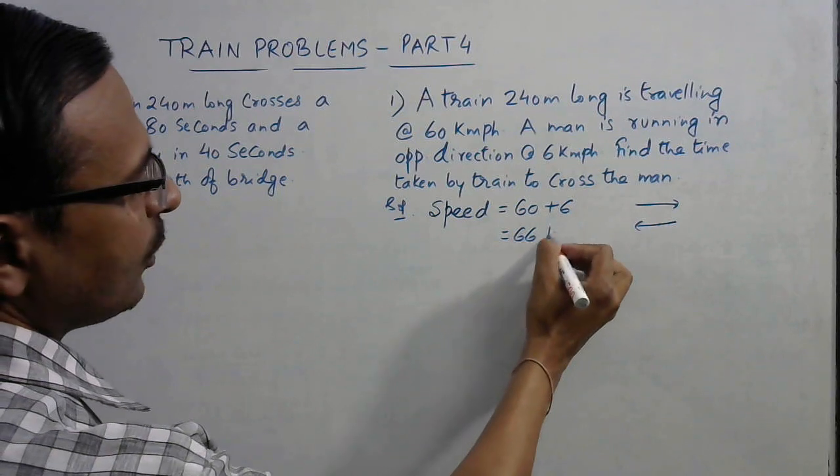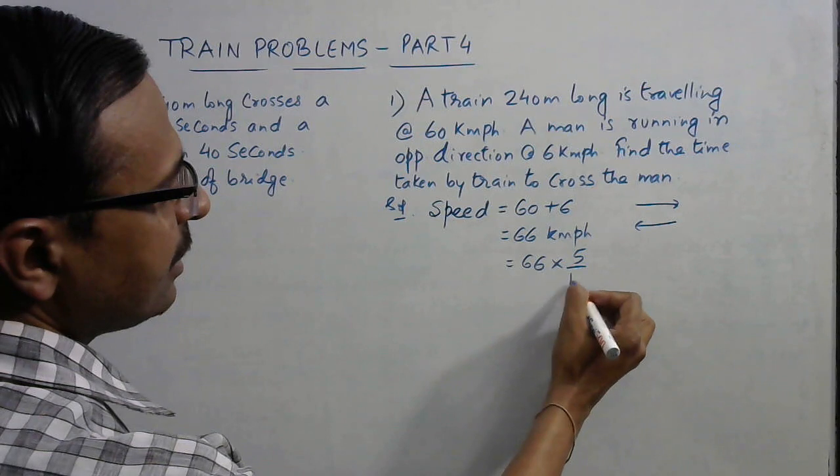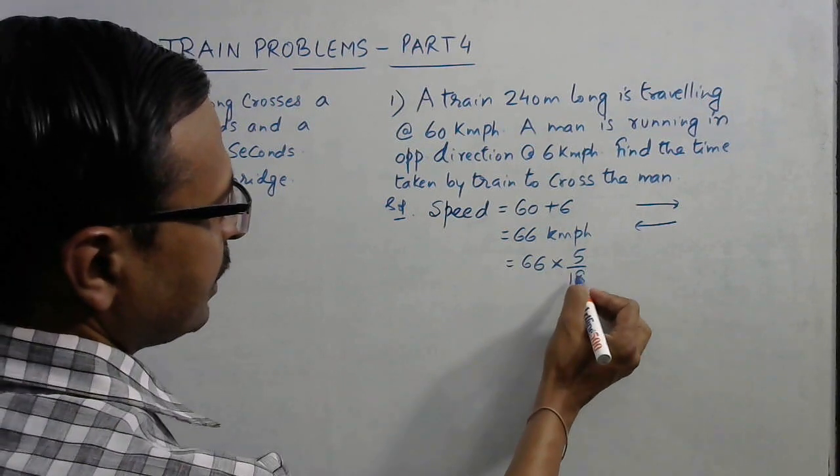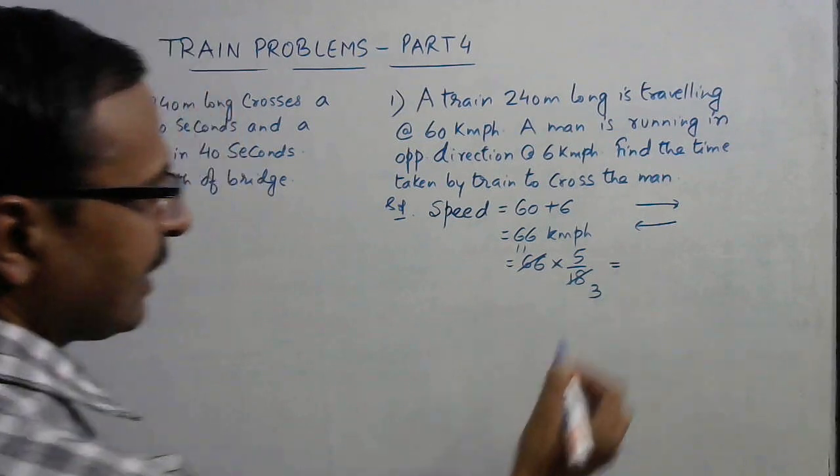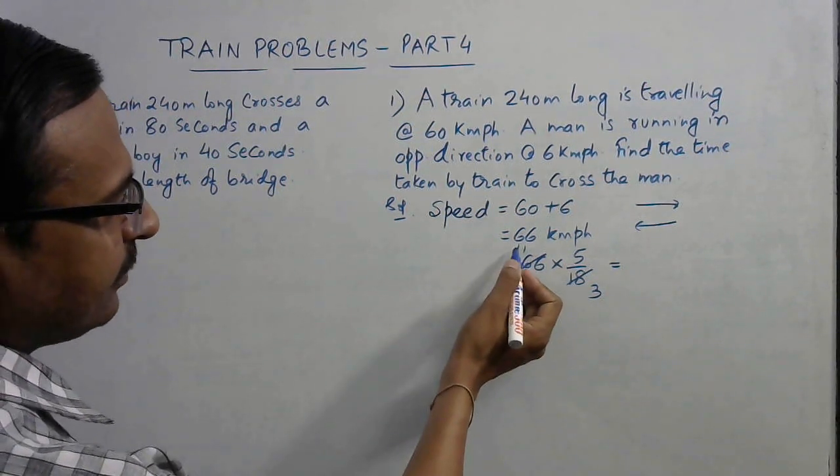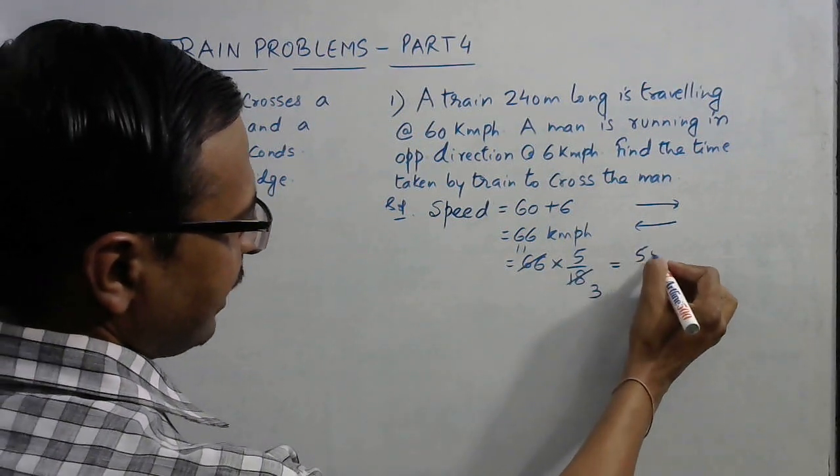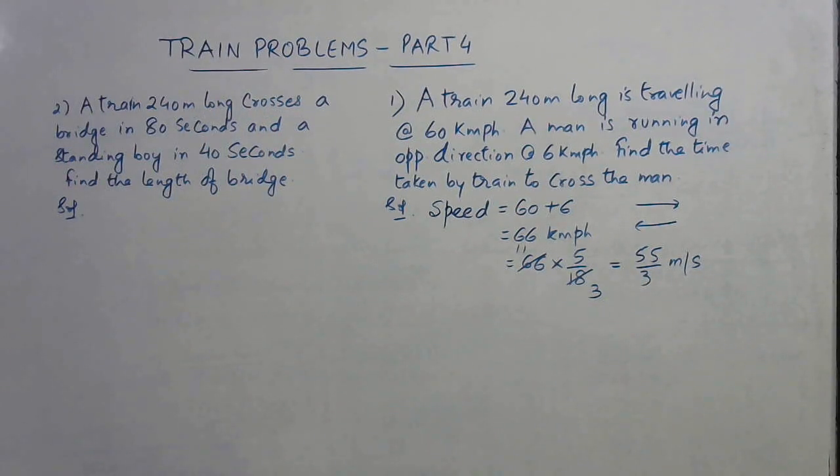This needs to be converted into meters per second by multiplication with 5 by 18. So this will be—this goes 3 times, this goes 11 times—so this is 11 into 5, which is 55, and by 3 meters per second. So this is the speed which we have to consider in this case.